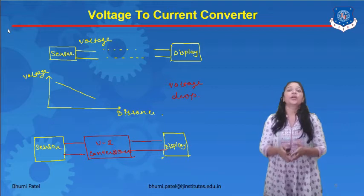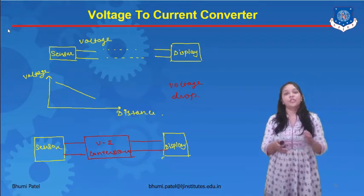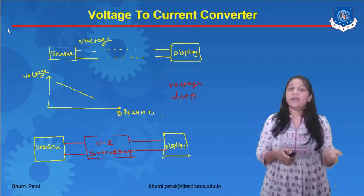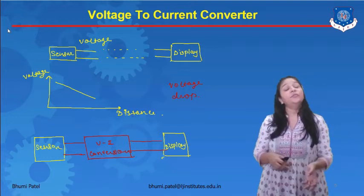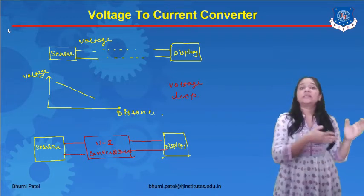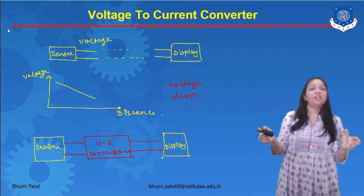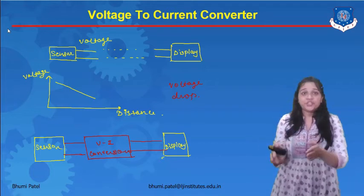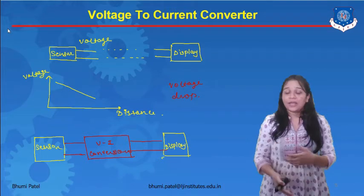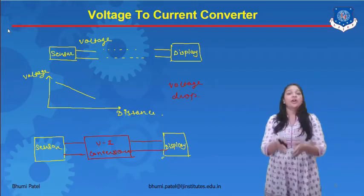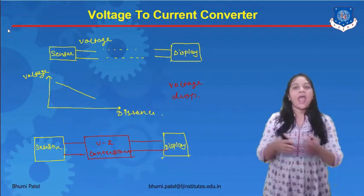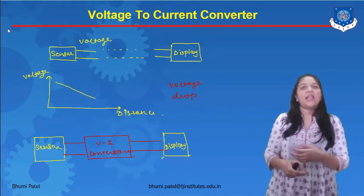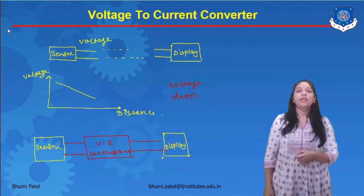The next converter is the voltage to current converter. We need to convert voltage into current. Generally, we connect a sensor to the instrument or process, and a display is connected. Between the sensor and display there is a large gap, and whatever voltage is applied to the sensor experiences a voltage drop due to the distance. So we connect a voltage to current converter between the sensor and the display.